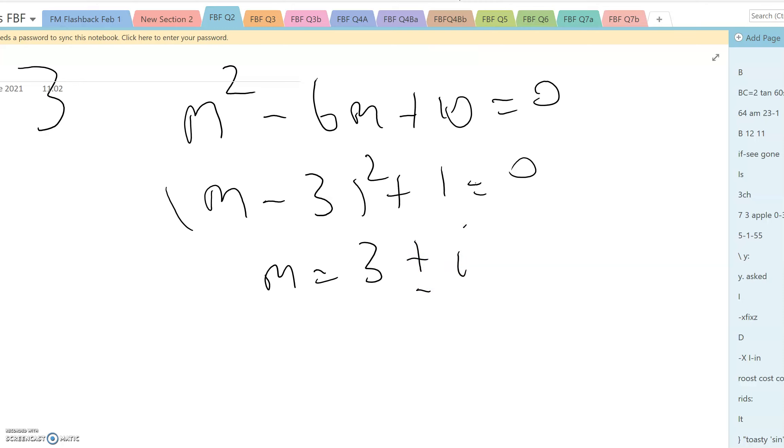And that means the general solution is going to be y is equal to e to the 3x, a cos x plus b sine x.